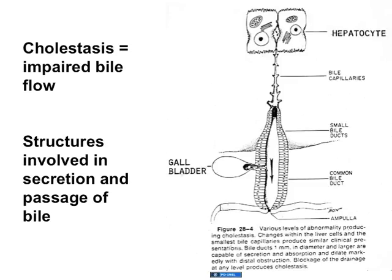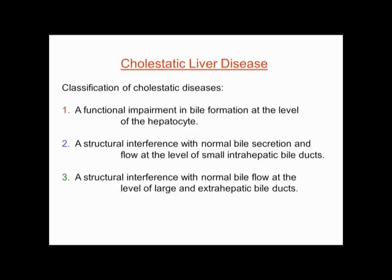The gallbladder hangs off to one side. Bile gets into the gallbladder and bile gets out. But if you cut out the gallbladder or block its entrance, are you going to impair bile flow? No — it's a blind alley. Disease in the gallbladder does not impinge on bile flow getting down to the intestine. You can break cholestatic liver disease into: a problem at the level of the hepatocyte, structural interference in the small intrahepatic bile ducts, or structural anatomic interference with flow in the large and extrahepatic bile ducts down to the intestine.